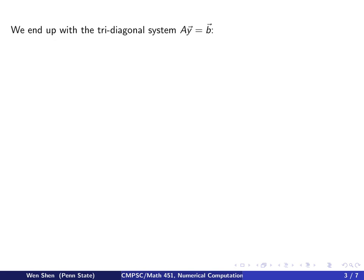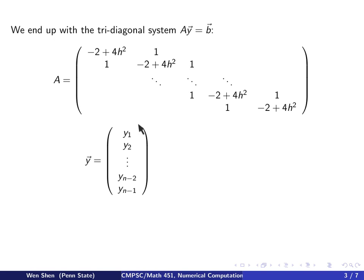Let's call it A times y bar equals b bar. Collecting my A matrix, I see on the diagonal I have negative 2 plus 4h squared. Upper diagonals are 1, lower diagonals are 1. And the y vector is the vector of all my unknowns from y1, y2 to yn minus 1. And the b is the load vector, containing all the terms 4h squared xi for the i-th component plus two additional terms for the first equation and the last equation where the boundary condition goes in.